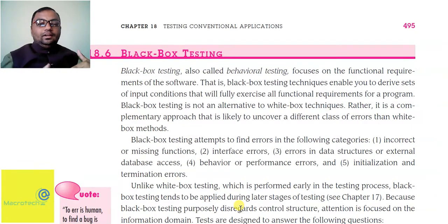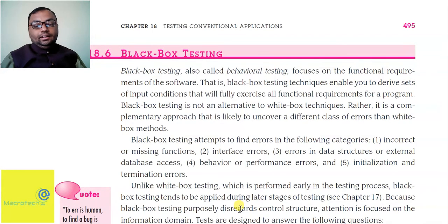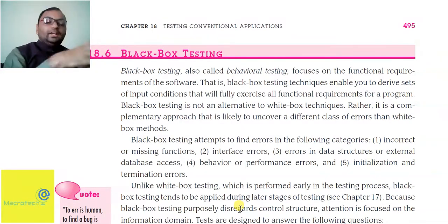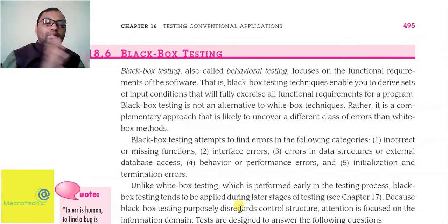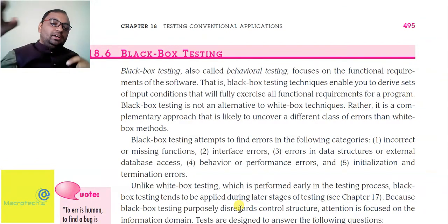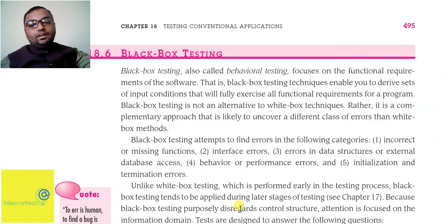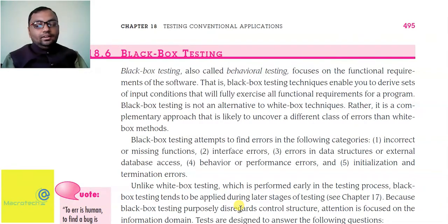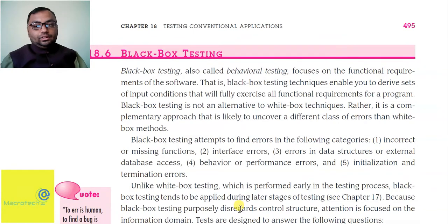Iska opposite yeh hai ke andar code mein kya pada hua hai, code mein kitne loops hain, code mein kitni conditions use ho rahi hain, us button ke liye jo code likha hua hai woh sahi tarike se likha hua hai — yeh cheez black box testing mein nahi dekhni hoti.